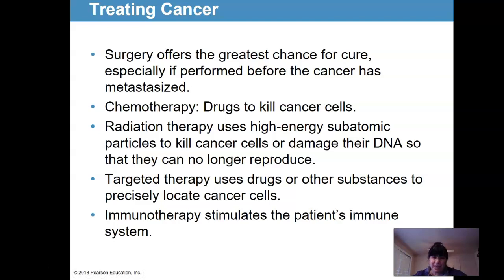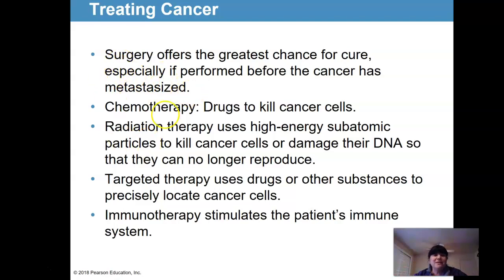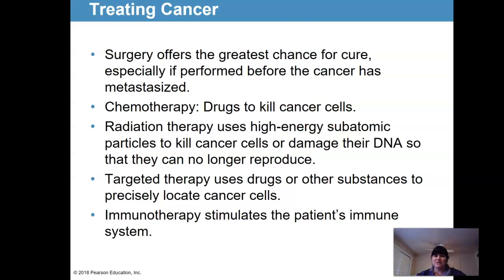So how do we treat cancer? Surgery — cut those bad cells out. Surgery offers the greatest chance for cure, especially if performed before the cancer has metastasized. Chemotherapy uses toxins — it's poison that targets rapidly growing cells to kill cancer cells. Radiation uses high-energy subatomic particles to damage cancer cell DNA so they can no longer reproduce. Targeted therapy uses drugs that precisely locate cancer cells. Immunotherapy stimulates the patient's immune system. All of these are treatments, and again, early detection is the best prevention.